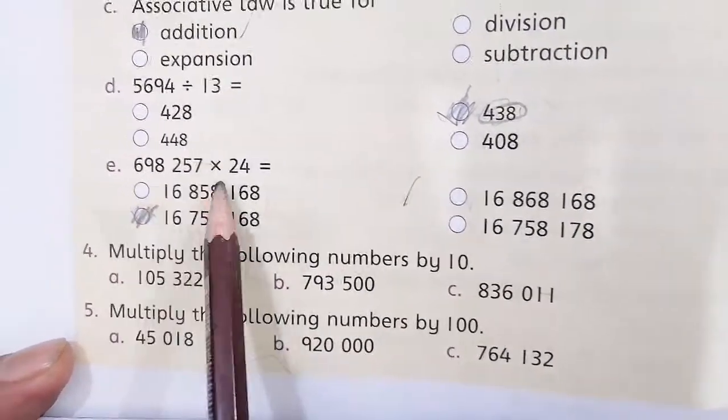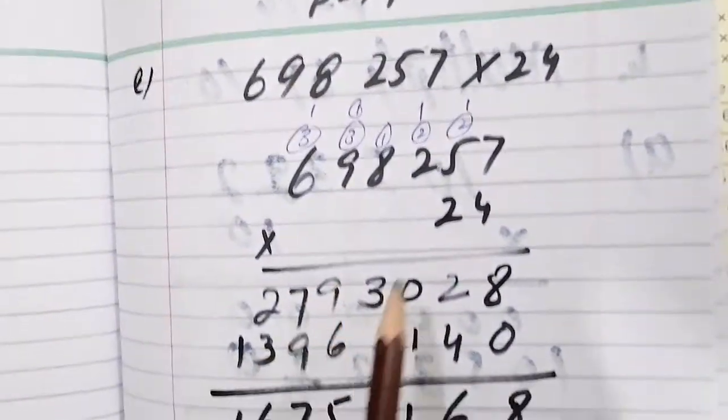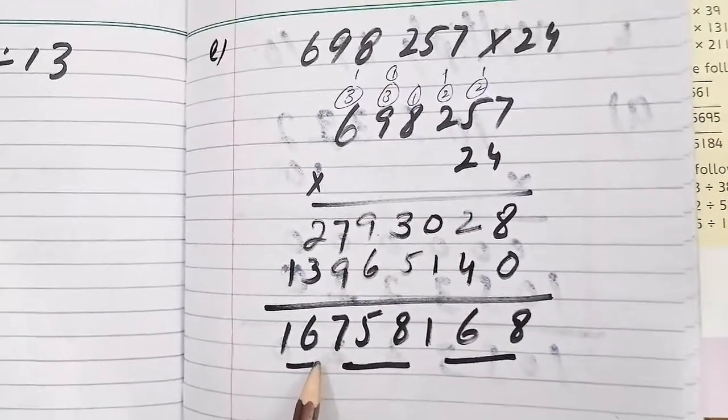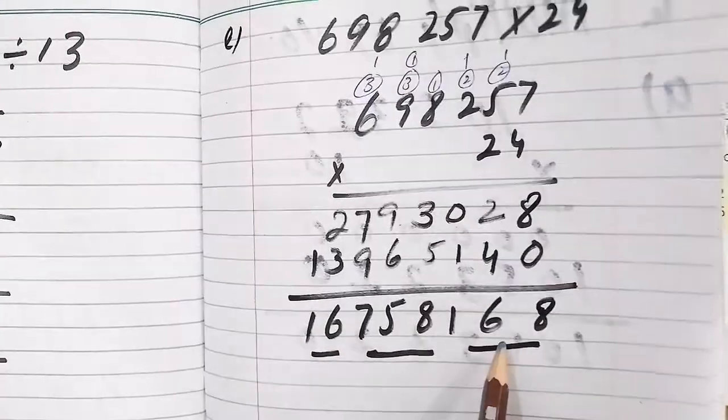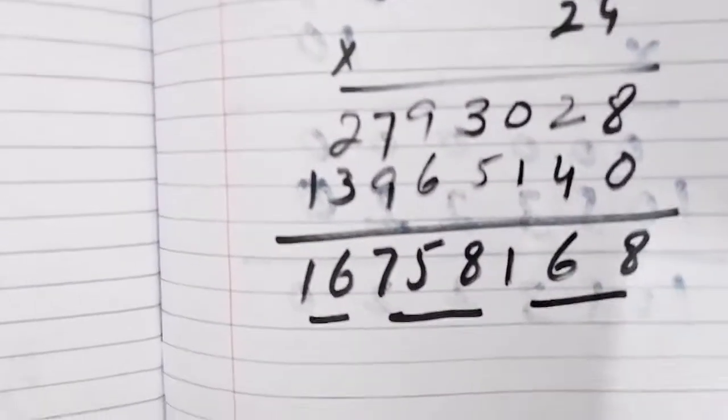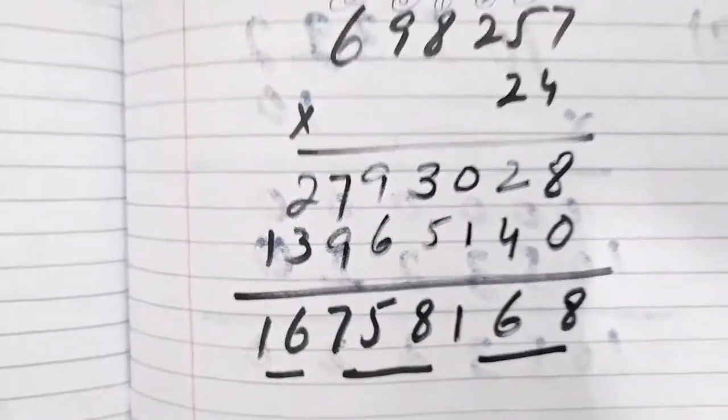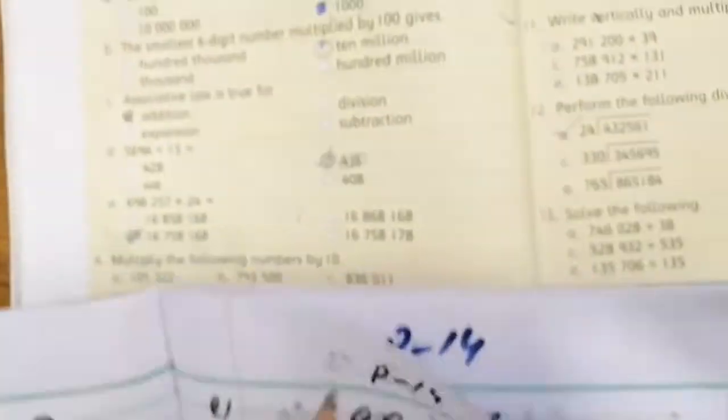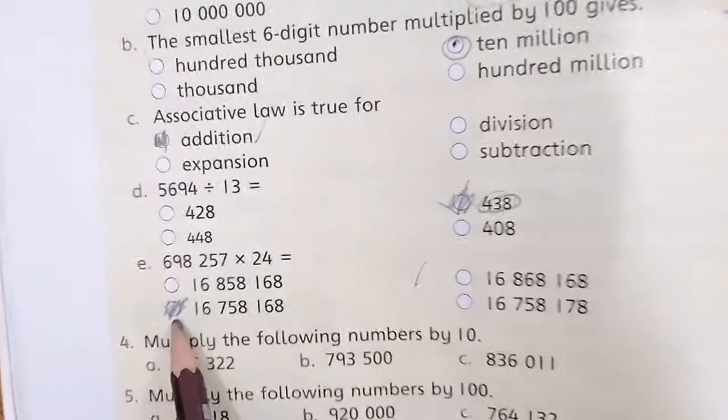Next problem: 6982 times 57 times 24, and 6758 times 168. Let's look at that for the second option. You can see this the answer option.